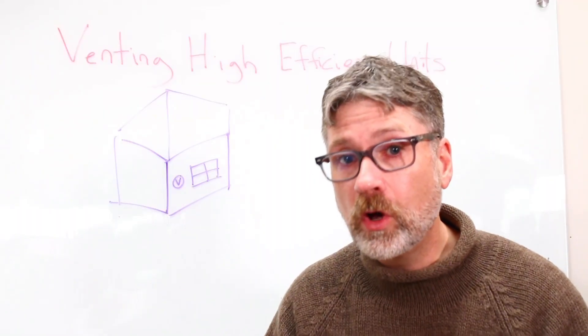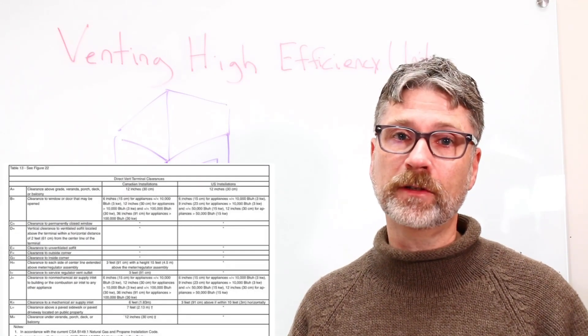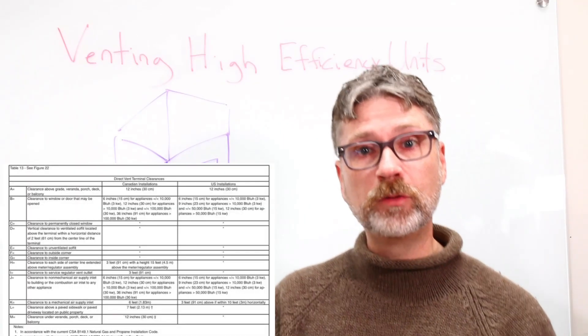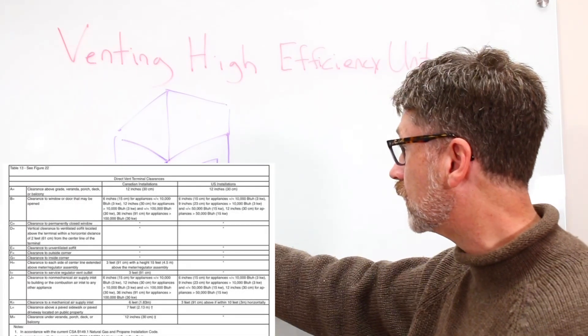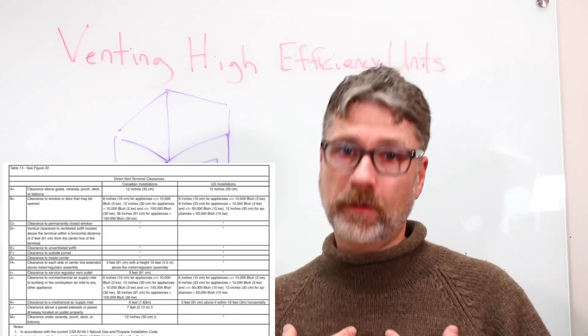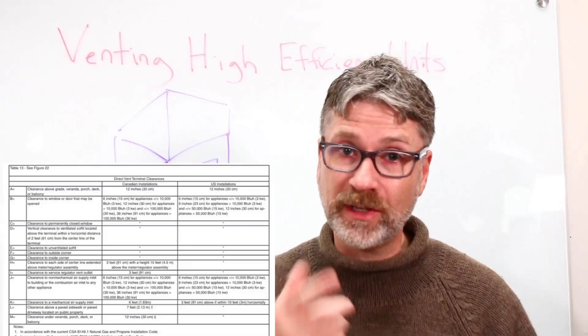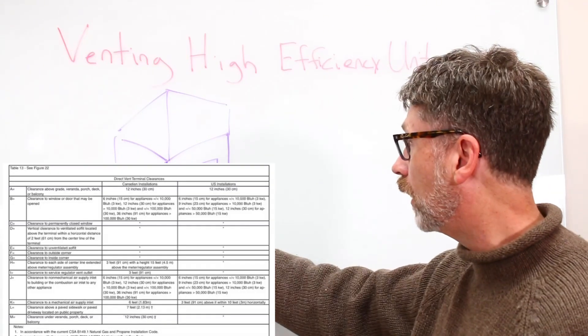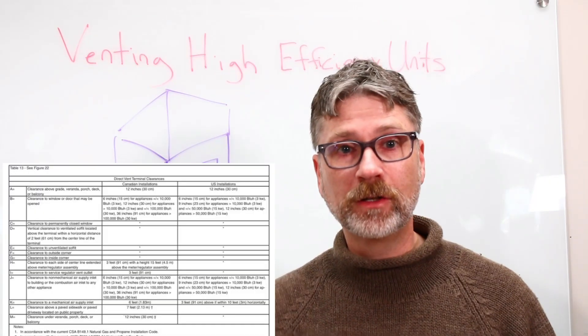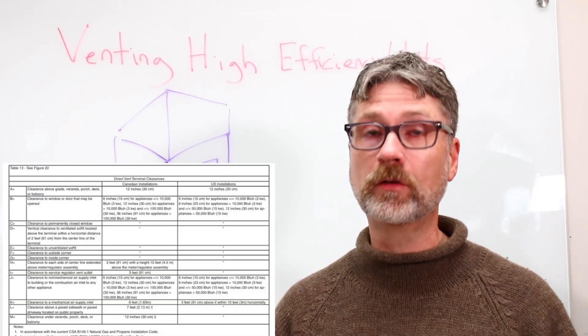Your state and local codes may also be different. So for example, the U.S. code says 12 inches to a window that operates. That's the distance between the vent and the window. Whereas your local code, what we have here in Tennessee for example, says three feet, considerably larger distance between the window and your vent. Find the chart, use the chart, and be aware of your local codes.